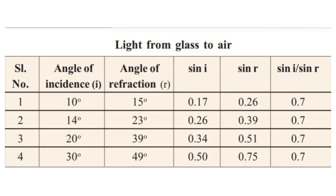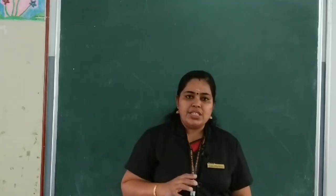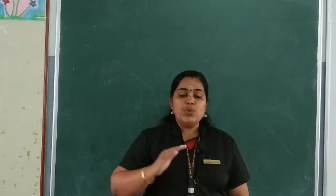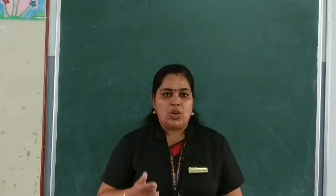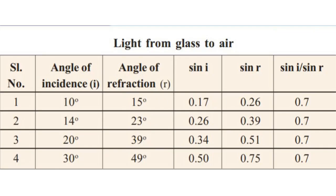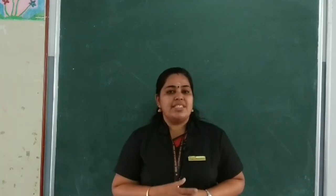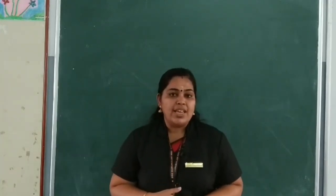Now look at the second table. Here the light ray is traveling from glass to air — denser medium to rarer medium. When a light ray travels from denser to rarer medium, it moves away from the normal, so the angle of refraction will be more. At 10° incidence, angle of refraction is 15°; sin i by sin r is 0.7. At 14° incidence, angle of refraction is 23°; the ratio is again 0.7. For the third and fourth values also, sin i by sin r is always a constant. This constant is known as the refractive index.